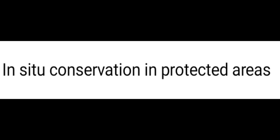Currently in India there are 103 national parks, 543 wildlife sanctuaries, 18 biosphere reserves, 8 natural world heritage sites, 173 conservation reserves, 45 community reserves, 4 biodiversity heritage sites, 467 important bird areas, 26 Ramsar wetland sites, and 131 marine protected areas.